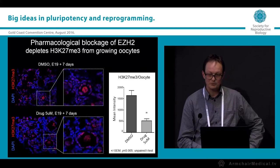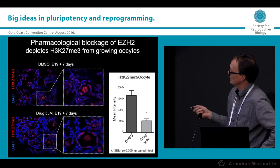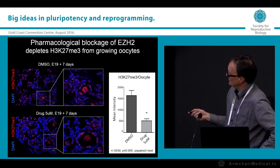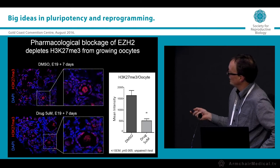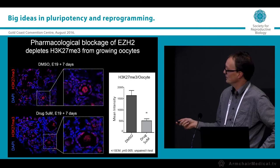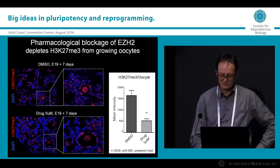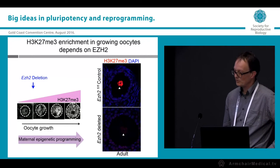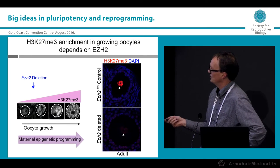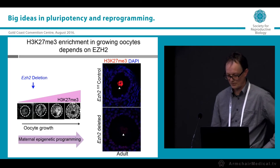Looking at growing oocytes treated for seven days from essentially birth, we see a significant reduction in H3K27, quantified here. To remind you, knocking out EZH2 early in this process completely depletes H3K27 in growing oocytes, so the drug is recapitulating a substantial portion of the genetic knockout effect.